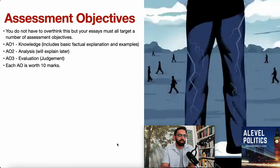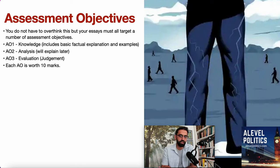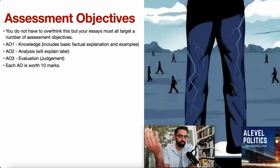I'm going to talk about interim and embedded judgments as a means to stitch your essay together. Now, a few words about assessment objectives. When you write an essay, you've got to know what you're targeting. There are three assessment objectives: AO1, AO2, and AO3. AO1 is knowledge, and that includes factual explanations and examples. When you give facts and examples, you're basically targeting AO1.